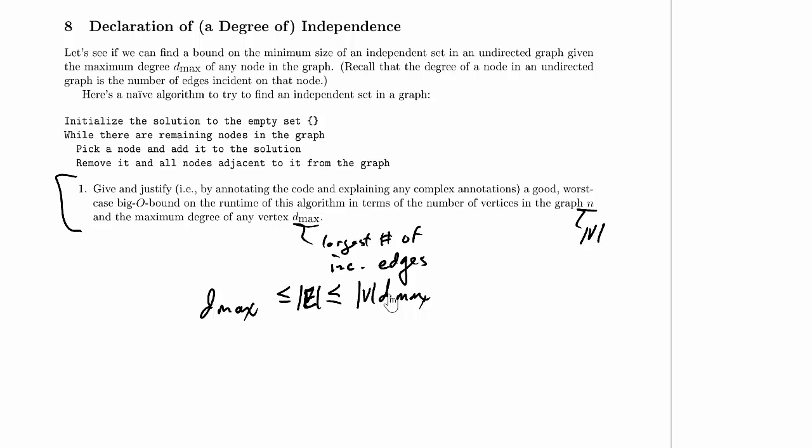Let's start looking at our algorithm. So we initialize our solution to the empty set. While there are remaining nodes in the graph, we're going to pick a node. And it doesn't say anything about how we pick the node. So we're just going to assume we pick a node arbitrarily. So we'll do it as cheaply as possible, and add it to the solution.